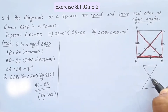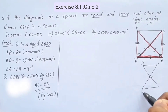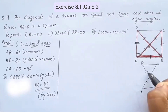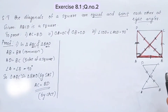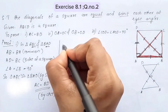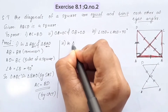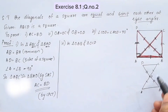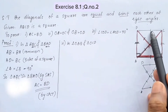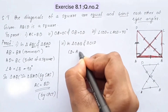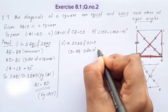We will choose triangle OAB and triangle OCD. In triangle OAB and triangle OCD: CD is equal to AB, as they are sides of a square.